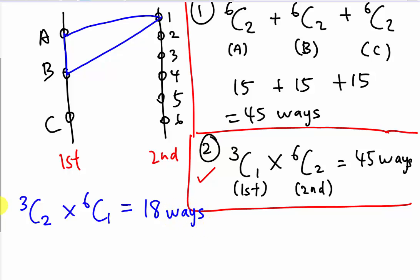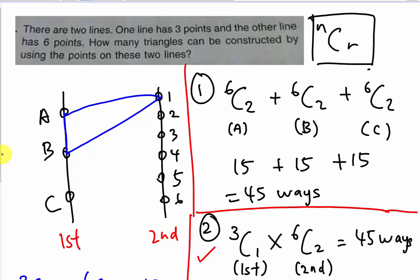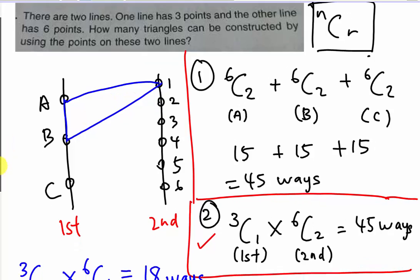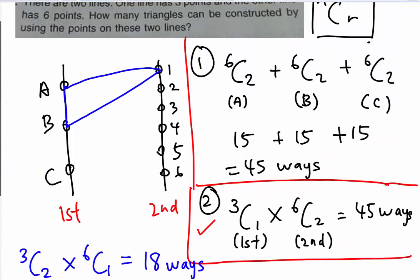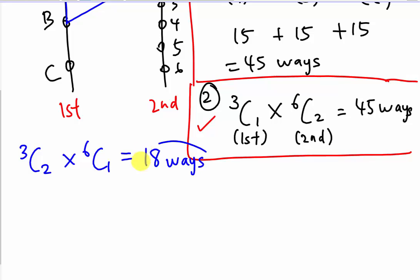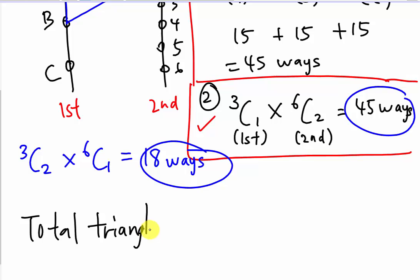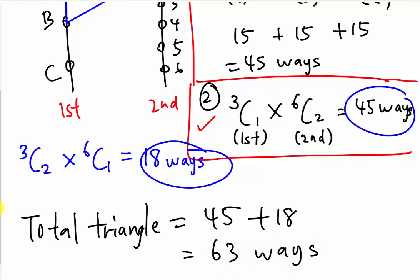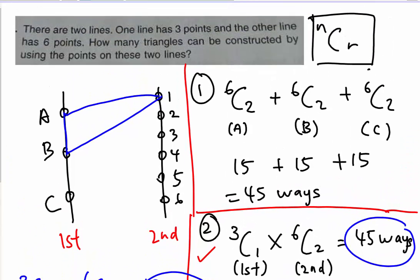These are the only two methods to form a triangle. So to find the total number of triangles that can be constructed using points on these two lines, it's simply 45 + 18 = 63. A lot of students know how to get the 45, but many don't realize you can also use two points on the first line to form a valid triangle.